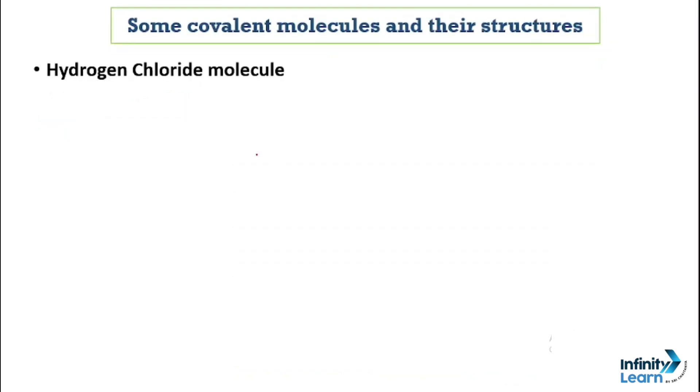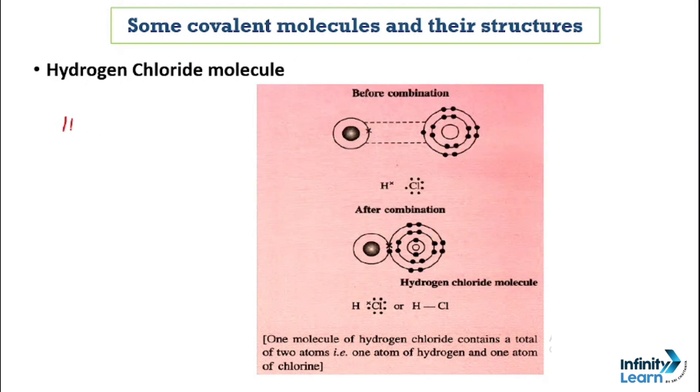So now let's talk about the third example, which is hydrogen chloride. Hydrogen's atomic number is 1, so electronic configuration is 1. Chlorine's atomic number is 17, so electronic configuration is 2, 8, 7. These are two types of atoms. For stable configuration like noble gas, hydrogen needs 1 electron and chlorine needs 1 electron. This is why at the end a single covalent bond forms, and you will see hydrogen chloride, which has total 2 atoms: 1 hydrogen and 1 chlorine.